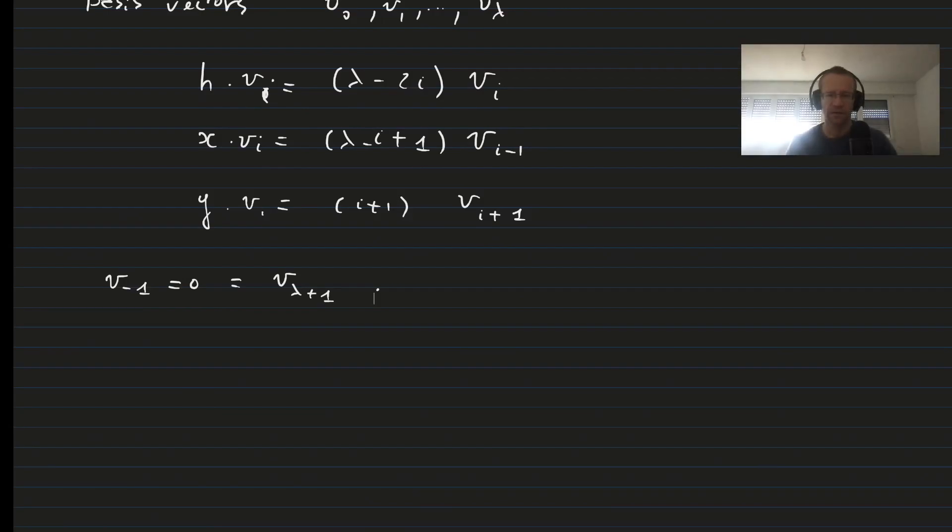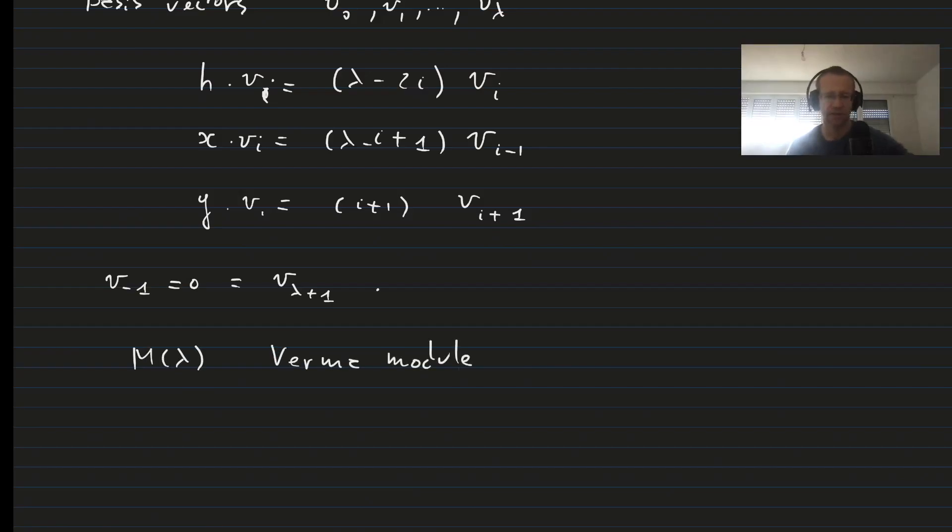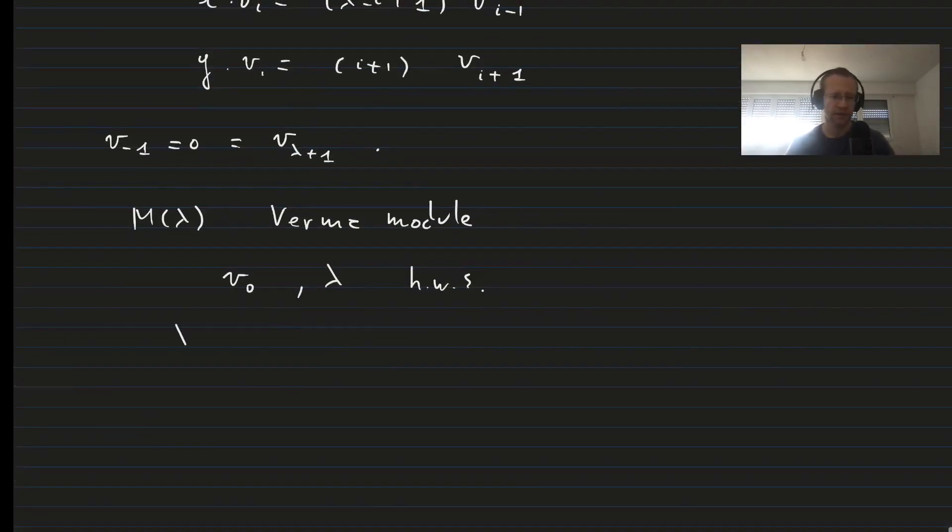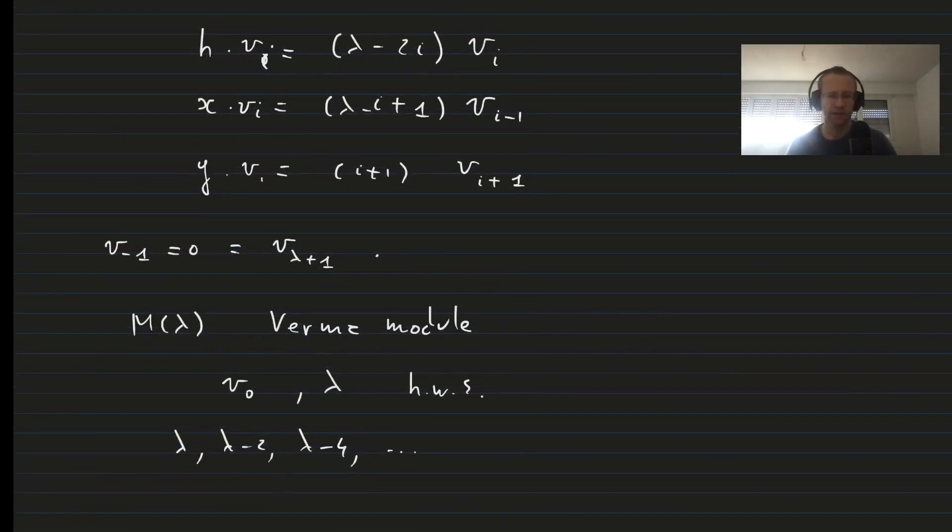Now let's see how this finite-dimensional representation fits into a Verma module. So recall that M of lambda is the Verma module. It has a highest weight state V0 of highest weight lambda. And otherwise it has weights lambda, lambda minus 2, lambda minus 4, etc., all the way down to minus infinity. The action of the generators on these states is precisely the one we had above.